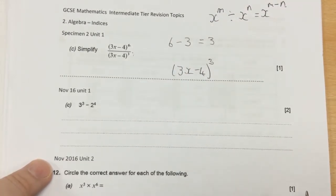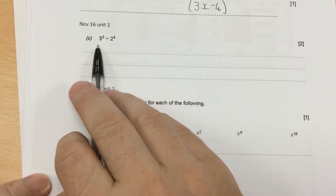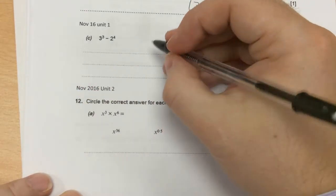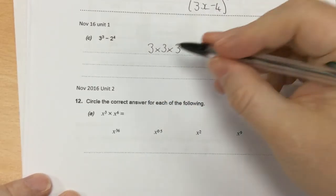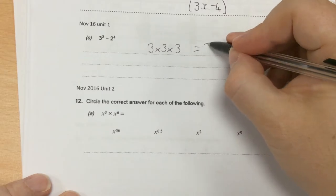The next one asks you to work out the value of, so it's talking about 3 cubed. 3 cubed means 3 times 3 times 3. 3 times 3 is 9. 9 times 3 is 27.